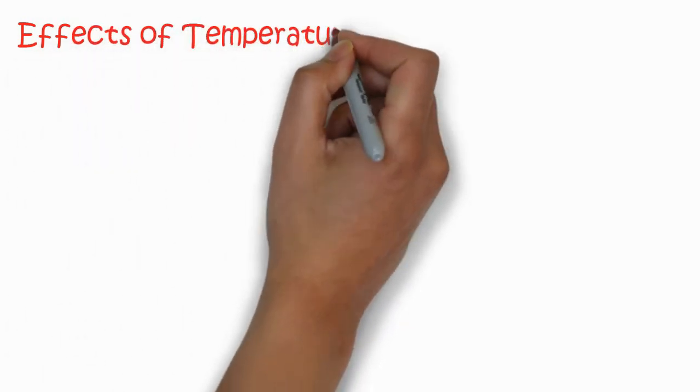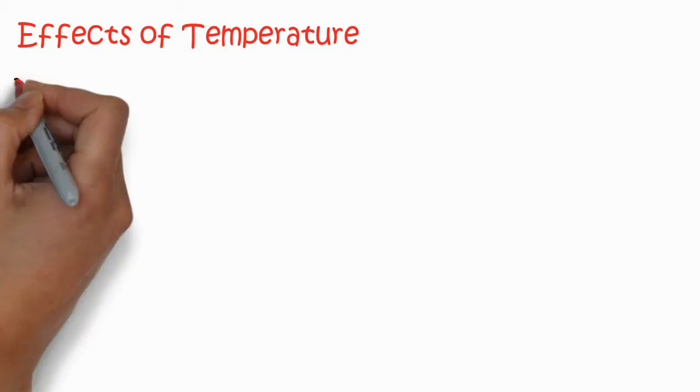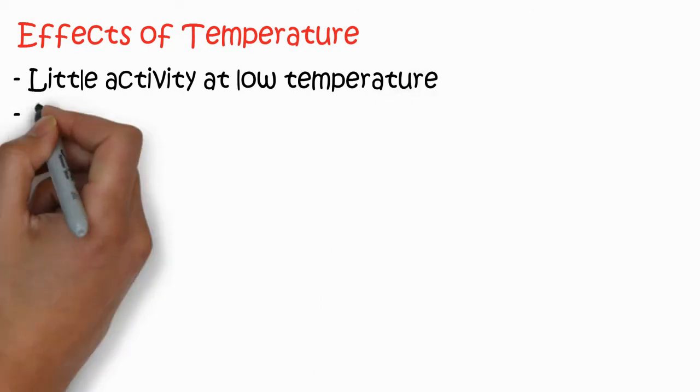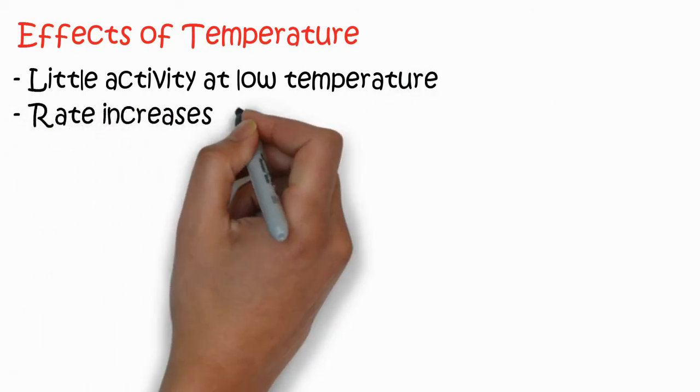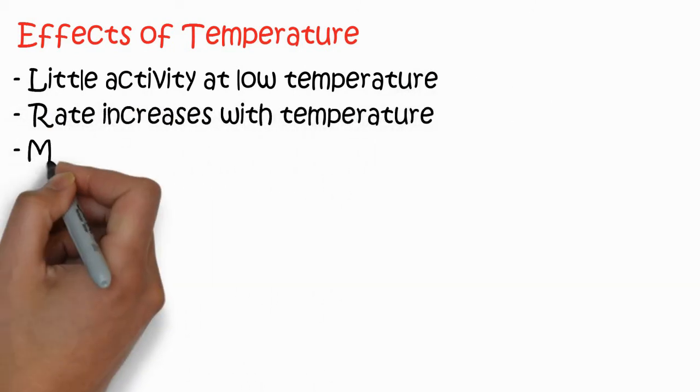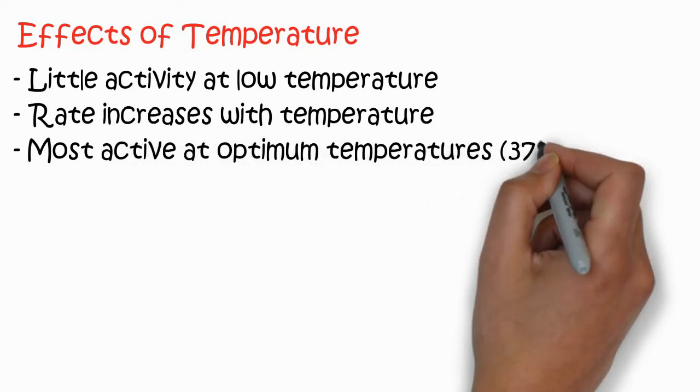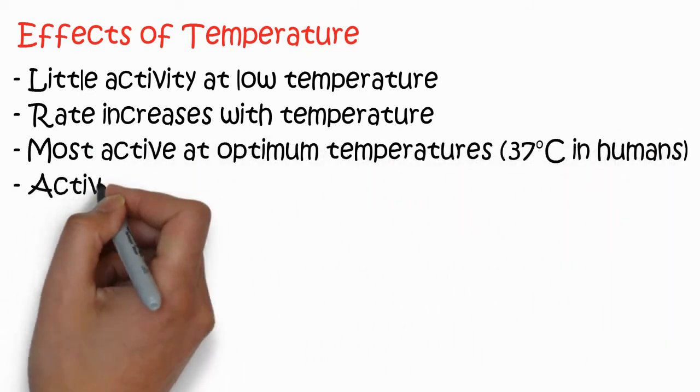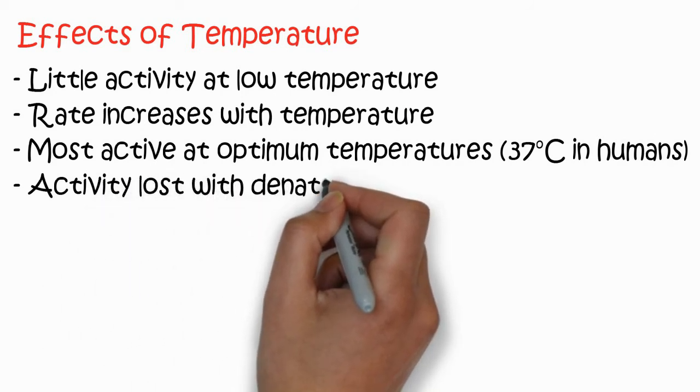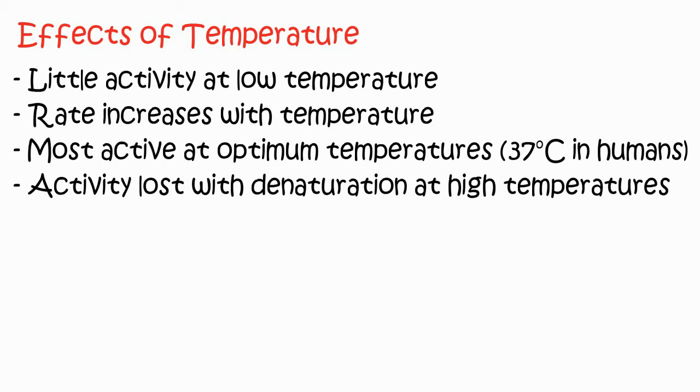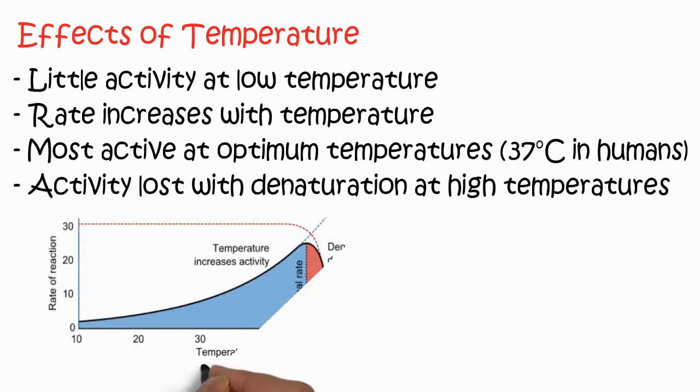Now we will discuss the effects of temperature on the activity of enzyme. Generally, there is little activity of the enzyme at low temperature. When the temperature increases, the activity also increases. Most activity is at the optimum temperature, like 37°C in humans. Activity decreases with denaturation.